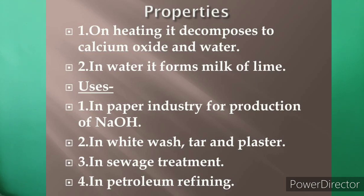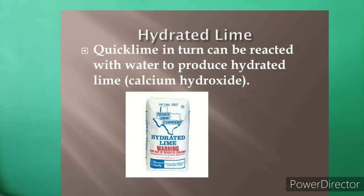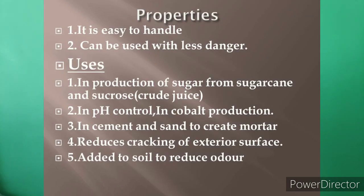Uses of slaked lime: in the paper industry for production of NaOH, white wash, tar, and plaster; in sewage treatment; and in petrol refining. The third type is hydrated lime — quick lime reacted with water produces hydrated lime (calcium hydroxide). It is easy to handle, used in production of sugar and fiber from sugar cane, pH control in cobalt production, cement-sand mortar creation, reduces cracking of exterior surfaces, and is added to soil to reduce odor.